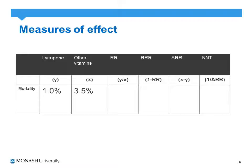In this hypothetical example, we're measuring lycopene versus other vitamins in the reduction of mortality from cancer. 1% of patients randomised to the lycopene group died from cancer, as opposed to 3.5% in the other vitamins group. To calculate relative risk, it's simply intervention divided by control — giving us a relative risk of 0.28.